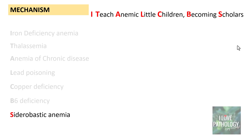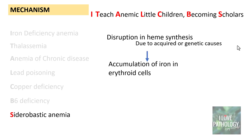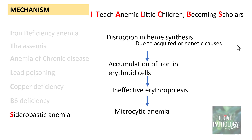The last important type is sideroblastic anemia, where there is disruption of heme synthesis due to various acquired or genetic causes. This disruption leads to accumulation of iron within erythroid precursor cells (erythroblasts), causing ineffective erythropoiesis and microcytic anemia. Sideroblastic anemia will be discussed in detail in another video.